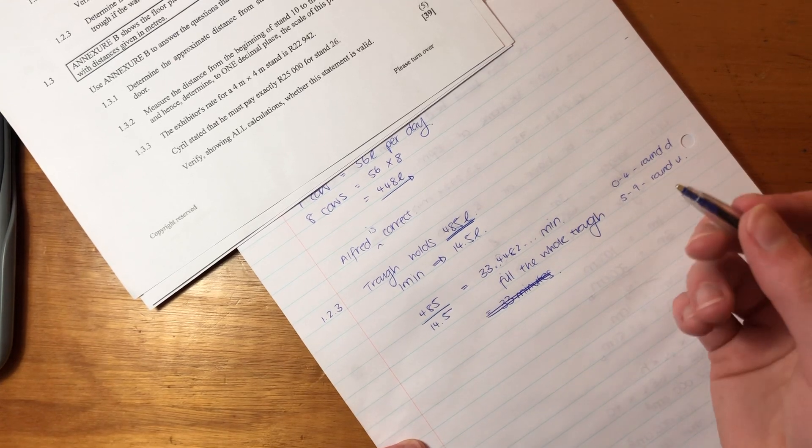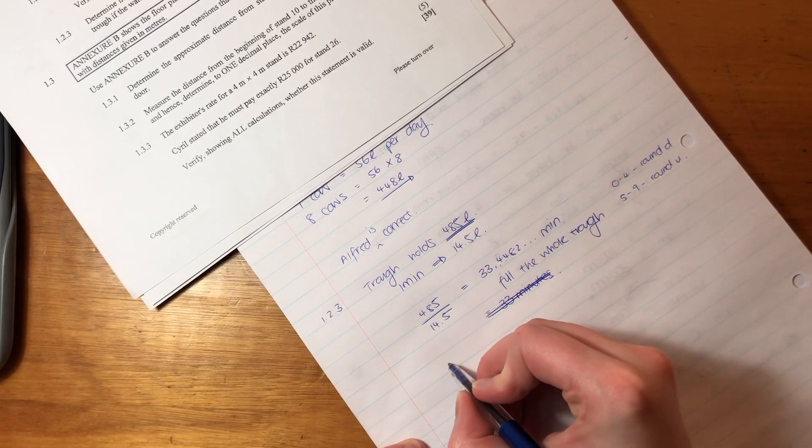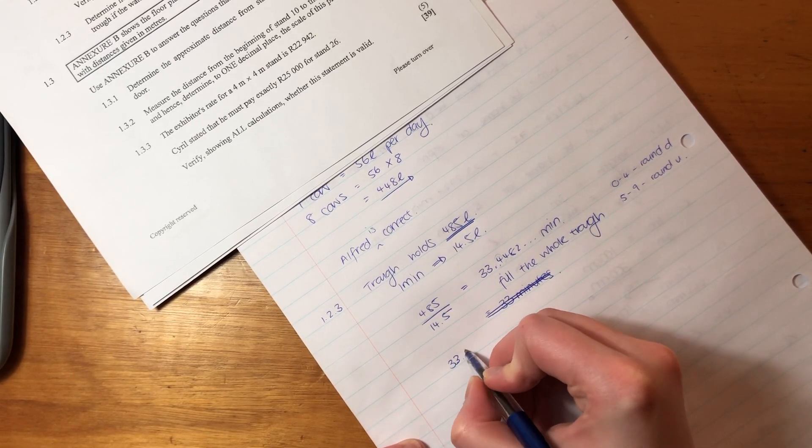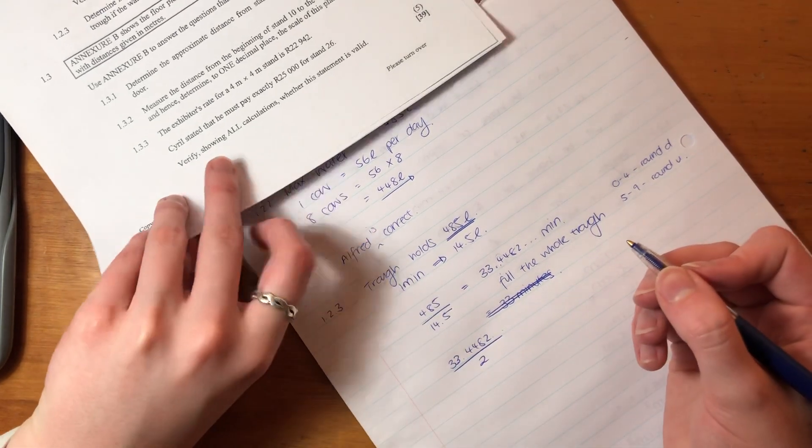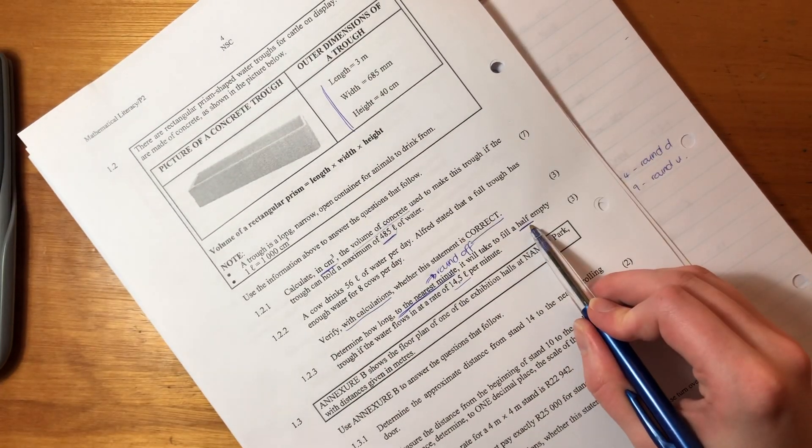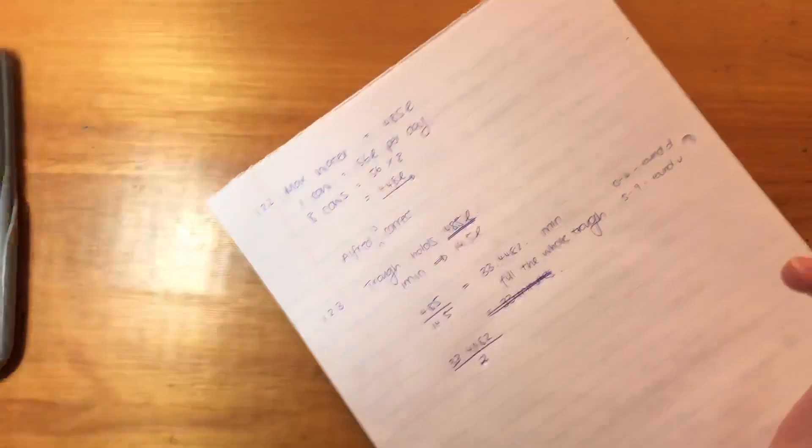So how long is it going to take to fill half a trough? We say 33.4482, whatever we got there in our calculator, divided by 2. Because we're only filling half of the trough since half of it is already filled.